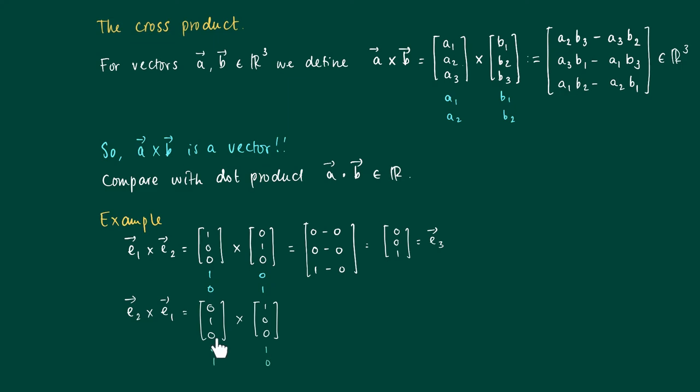You repeat the first two coordinates of the vector and form crosses. 1 times 0 minus 0 times 0, 0 times 1 minus 0 times 0, 0 times 0 minus 1 times 1. 0 minus 1 is minus E3.